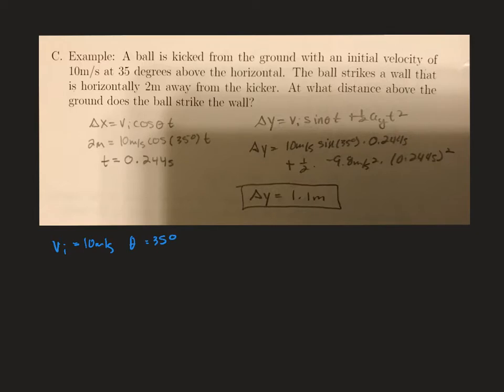Alright, so let's see, we're going to kick our ball, and it's going to come over here, and it's going to strike a wall. And we know horizontally, or delta x, the ball is traveling 2 meters, and we want to know over here what delta y is, so how high above the surface is the ball when it strikes the wall.